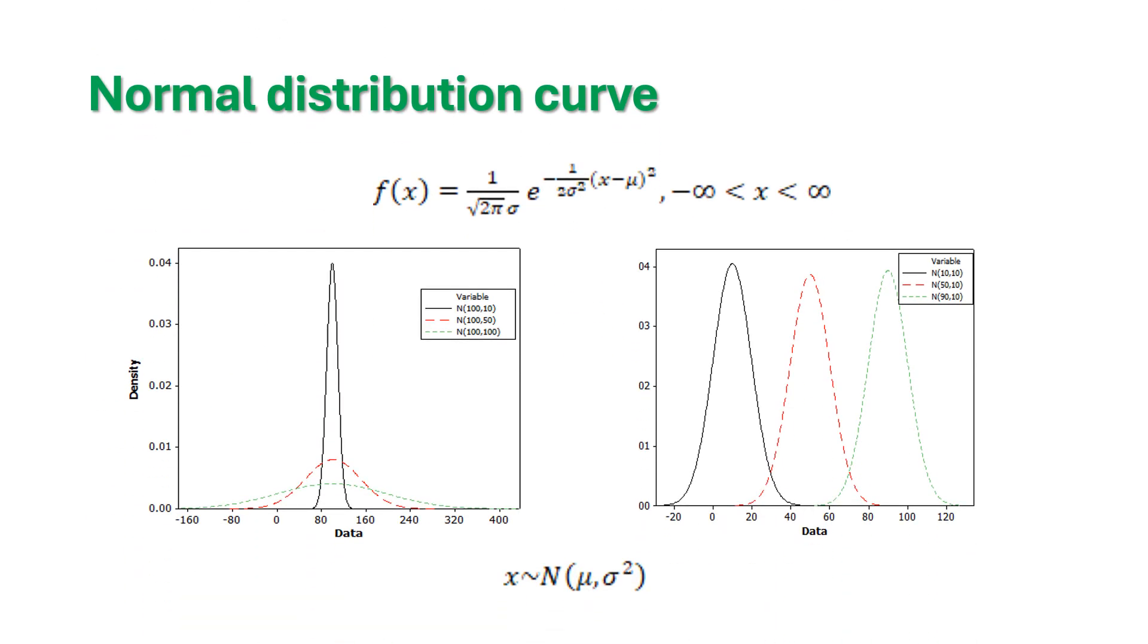Beautifully, they are shown in the mathematical function f(x) equals 1 over 2 pi sigma e power minus 1 over 2 sigma square (x minus mu) squared. x is ranging from minus infinity to plus infinity. Even mu is also ranging from minus infinity to plus infinity.